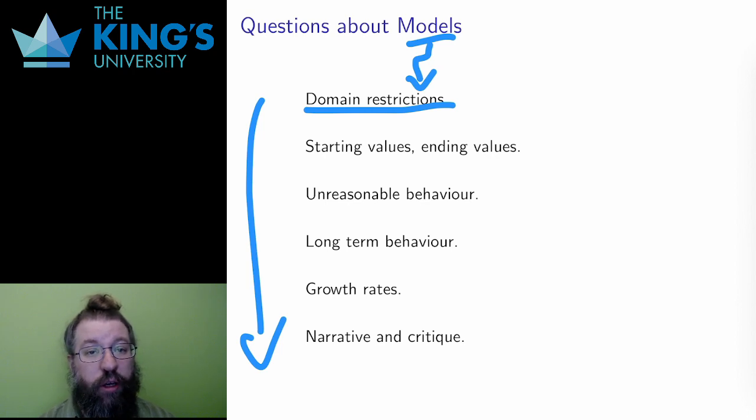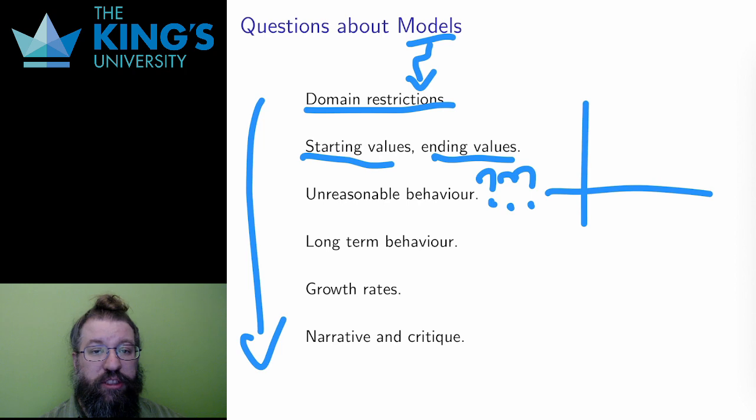I can ask for starting and ending values, and this is a bit like asking for intercepts but now I'm thinking about the model, where the model starts and where the model ends. I can ask if the model breaks anywhere, if there are any unreasonable values or unreasonable limits, places where the model doesn't make sense. And vertical asymptotes often show this kind of behavior.